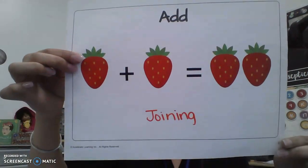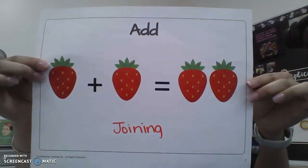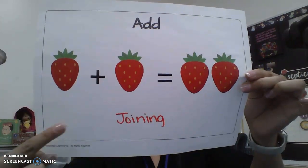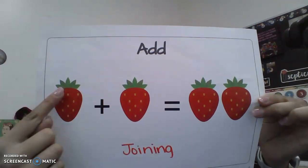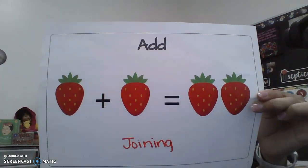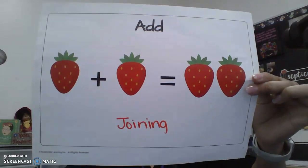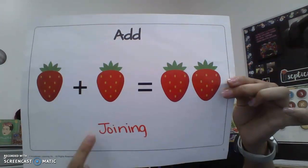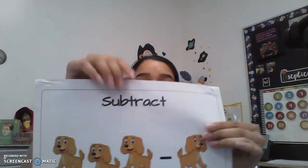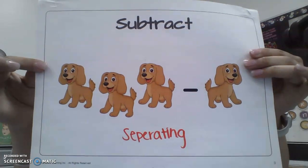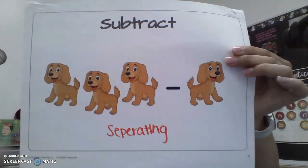Our first vocabulary word is adding. Adding is the same as joining. So if we have one strawberry and we add another strawberry, that equals two strawberries — we are adding, we are joining.